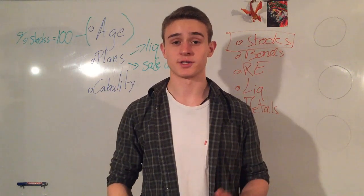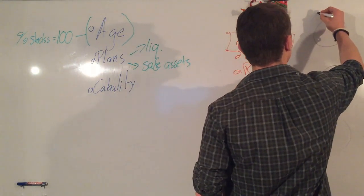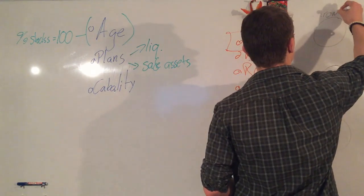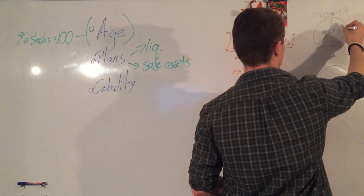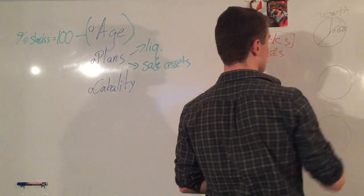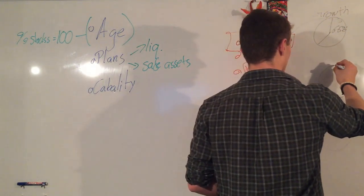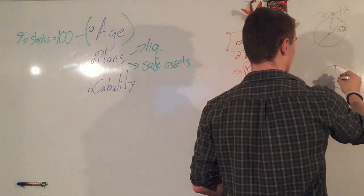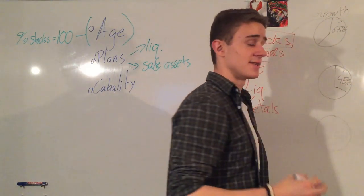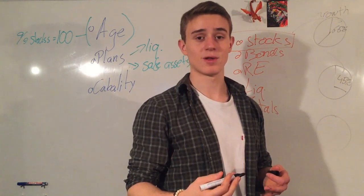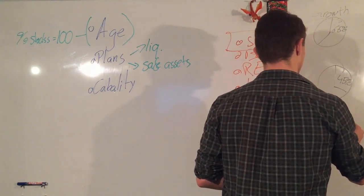The three most popular ways to make up a portfolio are: the growth portfolio, which will contain about 65 percent stocks; the balanced portfolio, which will contain about 45 percent stocks; and the defensive portfolio, which will contain about 25 percent stocks.